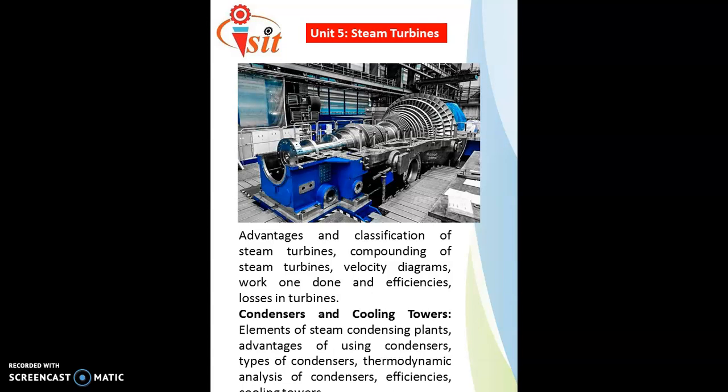The second half of unit 5 covers condensers and cooling towers. A condenser is a device used to convert steam into water by the latent heat of condensation process. The cooling tower provides cooling water in the condenser shell to enable the phase change. Topics include elements of the steam condensing plant, advantages of using a condenser, types of condensers, thermodynamic analysis of condenser, efficiencies, and cooling towers and their types.